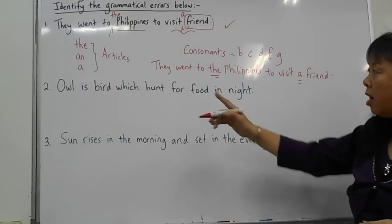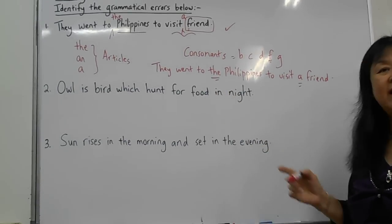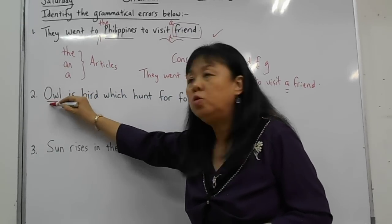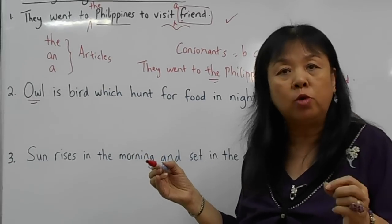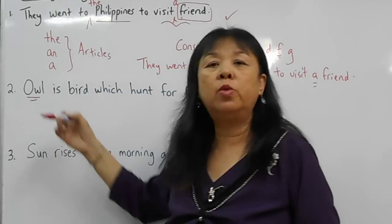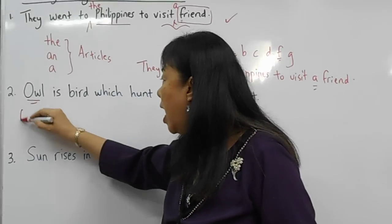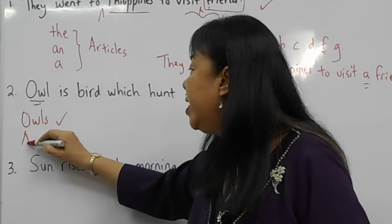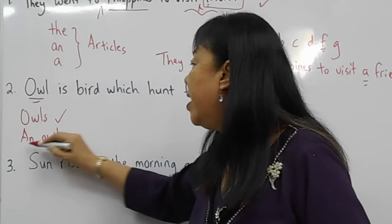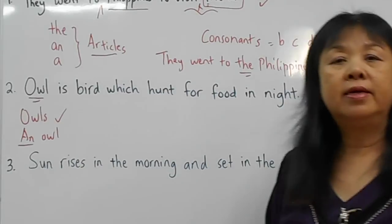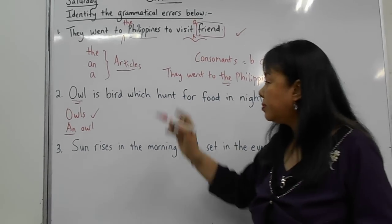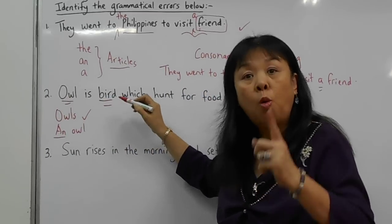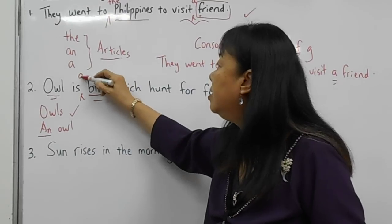Now let us look at the second sentence: 'Out is bird which have for food in night.' There are many grammatical errors here. Firstly, we do not start a singular noun 'owl' without an article, so it is either 'owls' or 'one owl.' We should say 'an owl' — 'an' because owl starts with a vowel. An owl is one bird, therefore it should be 'an owl is a bird.'